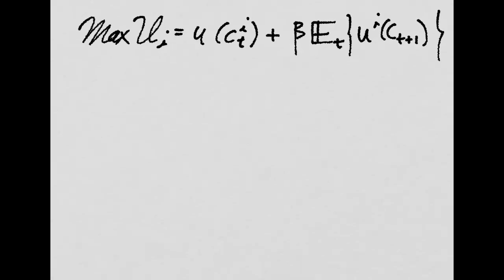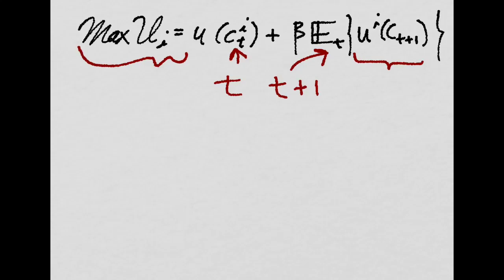Our agent wants to maximize his lifetime utility. Here we assume that the agent only lives for a time t and a time t plus 1, and that his utility of consumption is this right now, and that in the next period it's going to be expected utility of consumption. It's expected because he doesn't really know in which state of the world he's going to be.